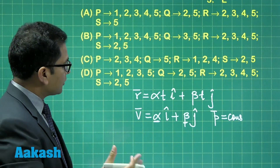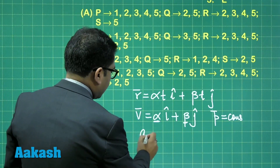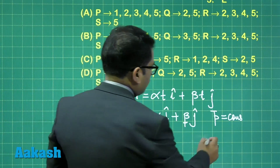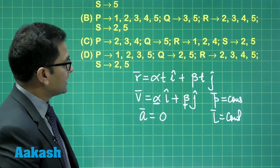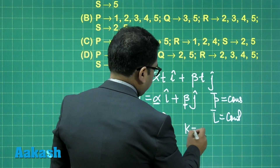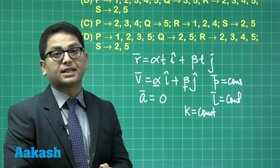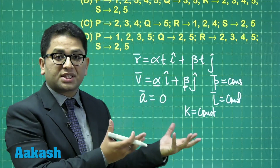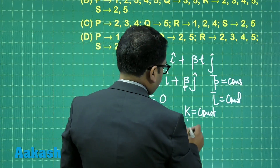For angular momentum, we can check using torque. The acceleration is zero, which means the force is zero, so the torque due to this force is zero. Therefore angular momentum is conserved. Kinetic energy is also conserved because the speed is constant. For potential energy: since the force is zero, the work done by the conservative force is zero, so potential energy is conserved.